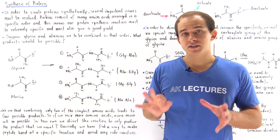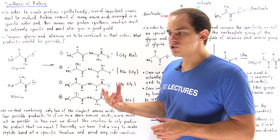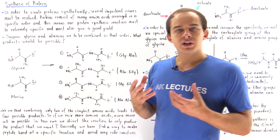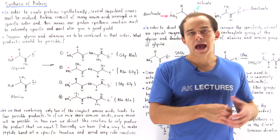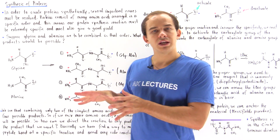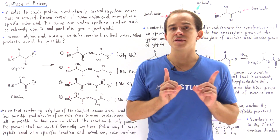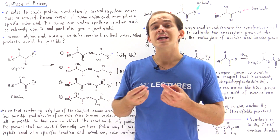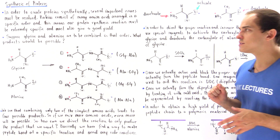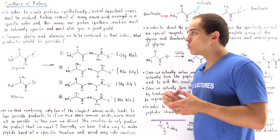In the previous several lectures we discussed the methods by which we can break down the protein into individual constituent amino acids. But how exactly can we go in reverse? How can we combine the amino acids to form our protein? Our body synthesizes proteins in its own unique fashion, and the synthetic synthesis of proteins in the lab is different than the way that our body synthesizes proteins. In this lecture we're going to focus on the synthetic or artificial synthesis of proteins, the way that we synthesize proteins in the lab.